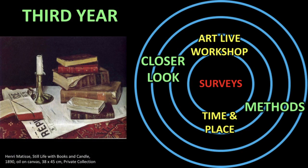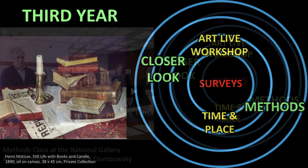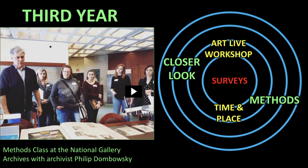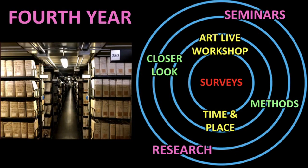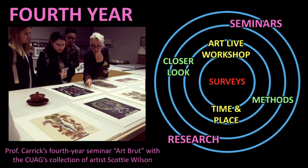In third year, things become a little more focused still. This is where you'll have your methods classes - where you learn the technical aspects of art historical study. Here you can see an example of a methods class at the National Gallery, guest-taught by one of the National Gallery curators. That's your capital advantage at work - not everybody has a National Gallery they can go to and schedule a class. In fourth year, we move into more advanced research, small-scale seminars, even some individual research. Here's an example of one of our fourth-year seminars, taught by Professor Carrick, looking at the Carleton University Art Gallery's collection of paintings by an artist named Scotty Wilson - a nice illustration of hands-on experience complementing classroom learning.